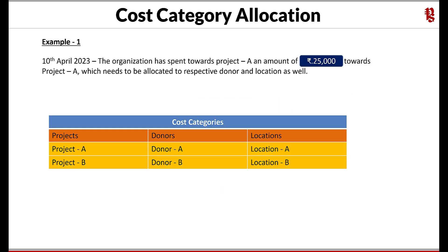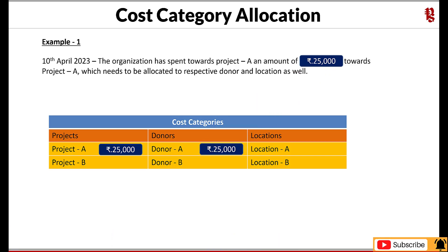Let us take an example of a transaction. On 10th April 2023, the organization spent ₹25,000 towards sanitation expenses for Project A. This expense needs to be allocated to three categories: which project, which location, and who is the donor. The ₹25,000 will be allocated to Project A under Projects category, Donor A under Donors category, and Location A under Locations category.